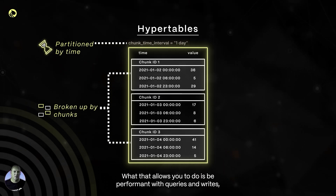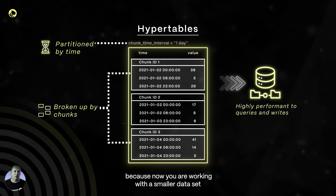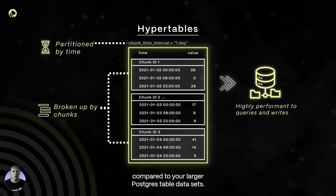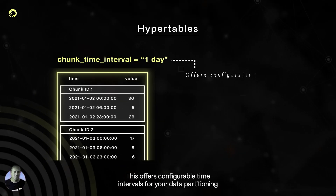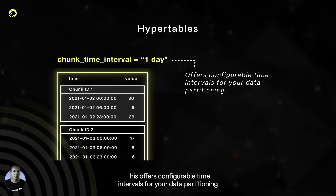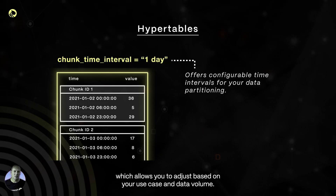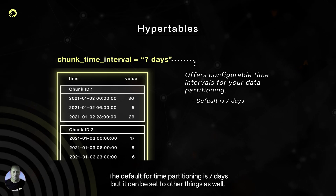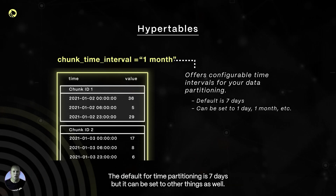What that allows you to do is be performant with queries and writes because now you are working with a smaller data set compared to your larger Postgres table data sets. This offers configurable time intervals for your data partitioning, which allows you to adjust based on your use case and data volume. The default for time partitioning is seven days, but it can be set to other things as well.